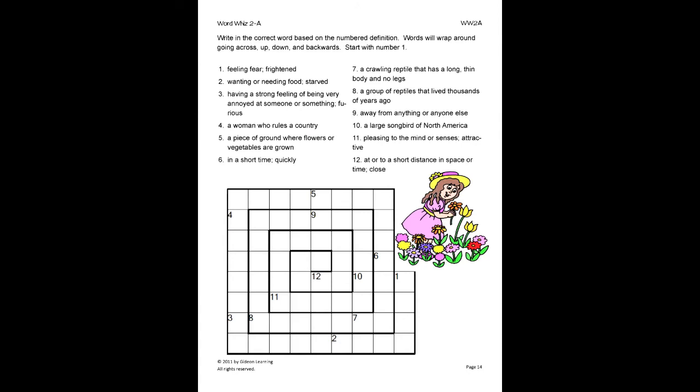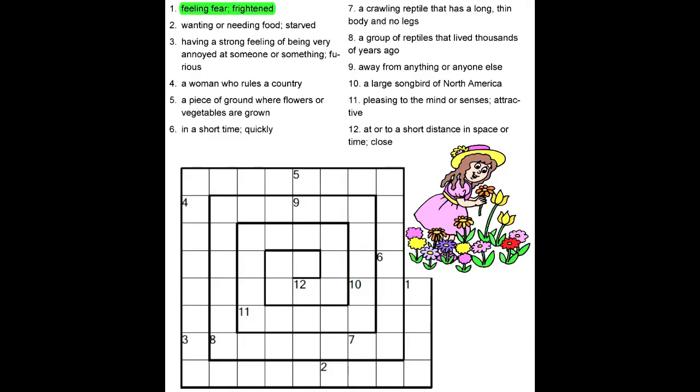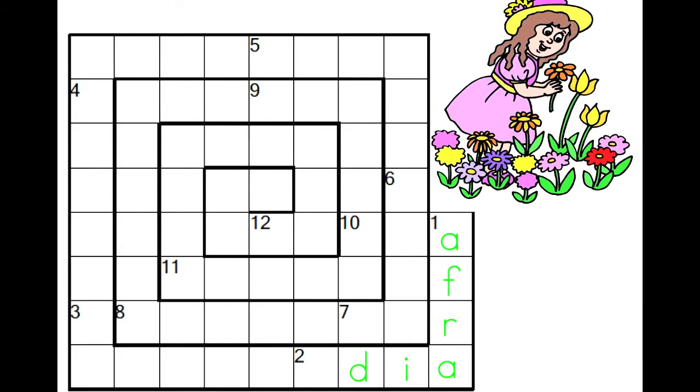On this exercise, the student will write the correct word based on the number definition. Words will wrap around going across, up, down, and backward. Start with number 1. First, read the given definition: feeling fear or frightened. We know this is the definition for afraid. So we neatly write each letter in its correct box starting with number 1.